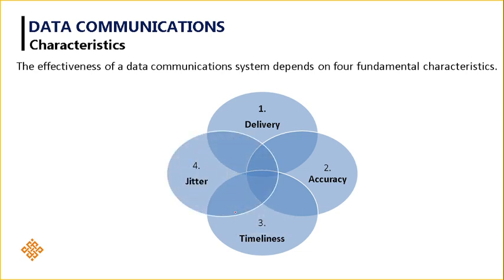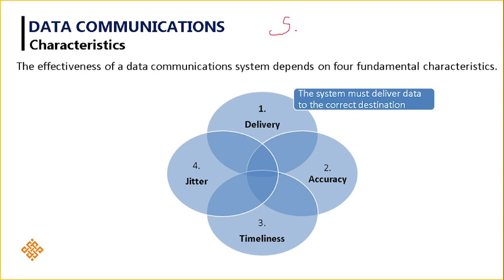What is delivery? The system has to deliver data to the correct destination. For example, whenever system one is transmitting some data to system two, the data should reach system two only — its destination. It should not deviate to some other system. An attacker may try to modify the data and change the path, moving it to some other system. We have a number of network attacks — active and passive — so the communication system should be maintained in such a way that the source transfers data to the intended destination.